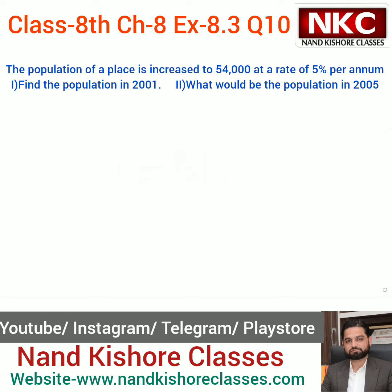Look at the statement on your screen: the population of a place increased to 54,000 in 2003 at a rate of 5% per annum. Part one: find the population in 2001. We don't know the population in 2001 — 54,000 is the final value given. My formula is A = P(1 + r/100)^t. This population is given after two years.